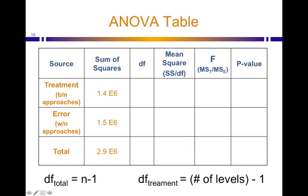Let's move one column over and work on degrees of freedom. Some rules of thumb will help you get through this quickly and interpret ANOVA tables when you see them. The total degrees of freedom is your total number of samples minus one — here that's 23. The degrees of freedom for treatment is how many levels you have for your treatment minus one. We had three levels — email, letter, and phone — so that's 2. And 23 minus 2 gives us 21 for the degrees of freedom for error.